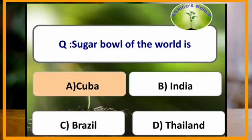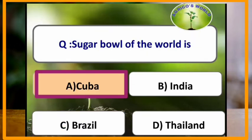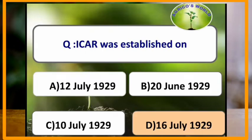Sugar bowl of the world is Cuba. ICAR was established on 16th of July in 1929.